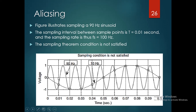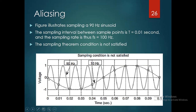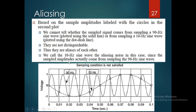In this case, the sampling theorem condition is not satisfied. Based on the sample amplitudes labeled in the second block, these are the sample amplitudes. We cannot tell whether the sampled signal comes from the 90 hertz sine wave or from the 10 hertz sine wave. They are not distinguishable, and thus they are aliases of each other.